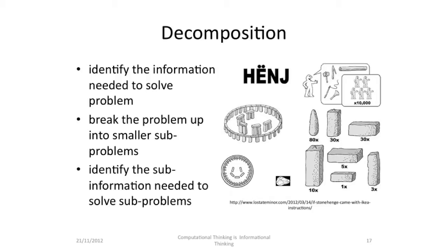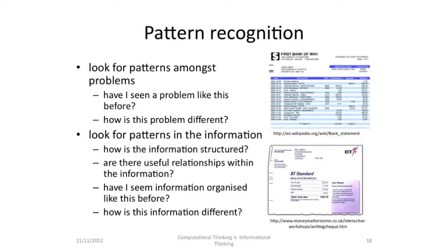In decomposition, you start by identifying the information you need to solve the problem, then you break the problem up into smaller sub-problems, and then you identify the sub-information needed to solve the sub-problems. For pattern recognition, you look for patterns amongst problems — have I seen a problem like this before? How is this problem different? And we look for patterns in the information: how is the information structured? Are there useful relationships within the information? Have I seen information organised like this before? How is this information different?